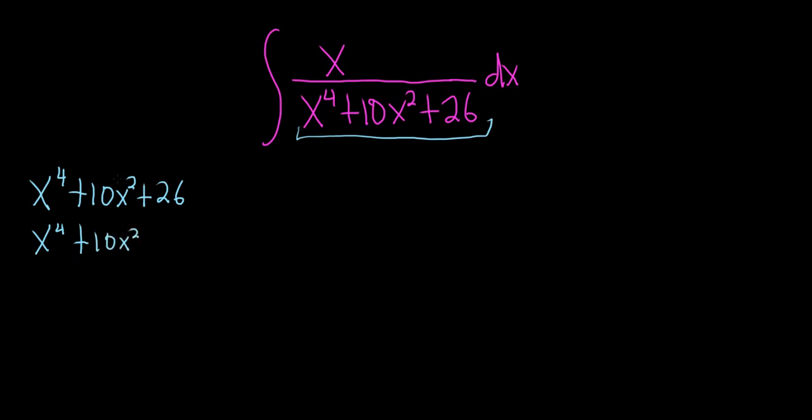And then what you do is you take this coefficient here and you divide it by 2 and you square it. So 10 over 2 is 5 and then 5 squared is 25. So we put a plus 25 here.